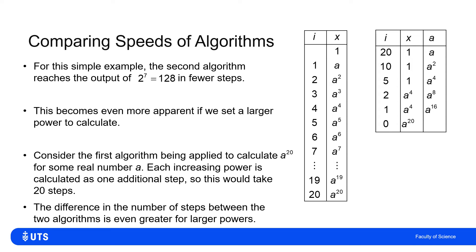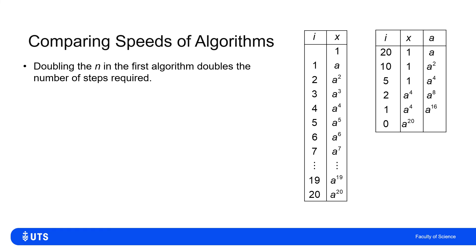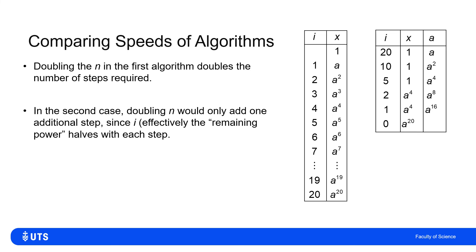Even calculating to the 20th power, if we wanted something huge we'd really want these algorithmic speed-ups. Doubling N in the first algorithm doubles the number of steps — a 40th power, 80th power, 160th power each require doubling the steps. In the second case, doubling N adds only one more step, because the remaining power halves with each step. So only one more step for a 40th power, two more steps for an 80th power. For large powers, one algorithm gets there very slowly; the other gets there really efficiently.